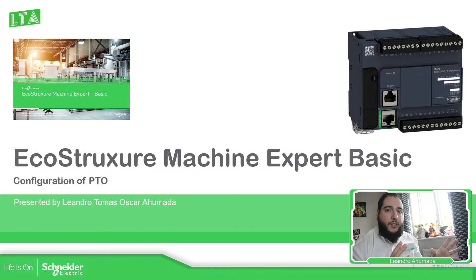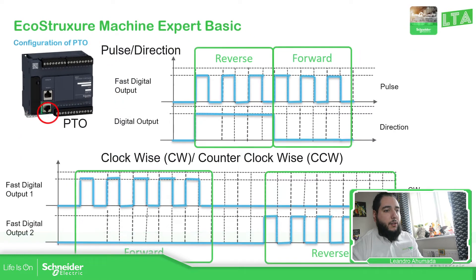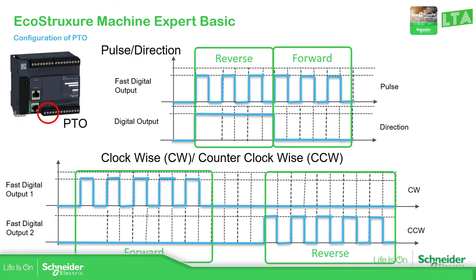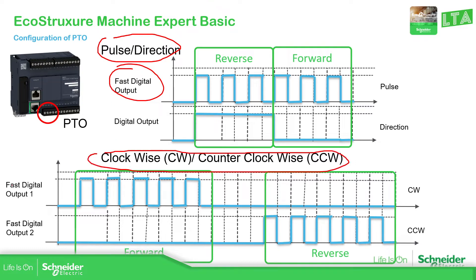In the previous video we saw the explanation about the PTO and PWM. Now we're going to focus on the configuration of the PTO. Looking at this graph, we can see the different ways to configure the output of the PTO on the M221. If we use pulse direction, we need one fast output. If we use clockwise/counterclockwise, we need two. So if you use pulse direction, you have the possibility to use another axis; otherwise you consume both axes in one.